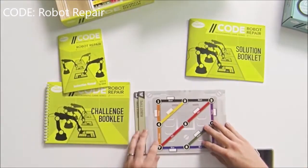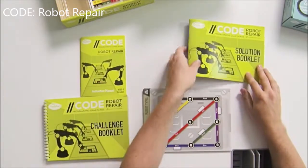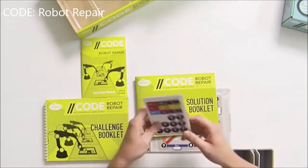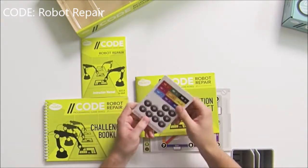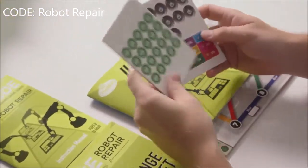Inside the box we have our game boards, our challenge booklet, instruction manual, solutions, and a number of tokens that we'll need to solve each challenge. Here we have power cells, on off tokens, and true false tokens.